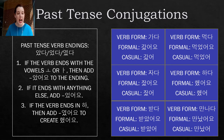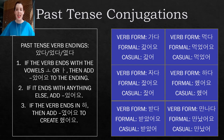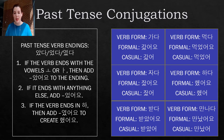If the verb ends with O or A, we add 았어요. If it ends with anything else, we add 었어요. And for 하다, we add 였어요 to make 했어요. So looking at our example 가다 on the right-hand side: the present tense conjugation was 가요, and for past tense we add the double S sound plus 아요, giving us 갔어요. To make it casual, all you have to do is drop the 요, so it becomes 갔어.